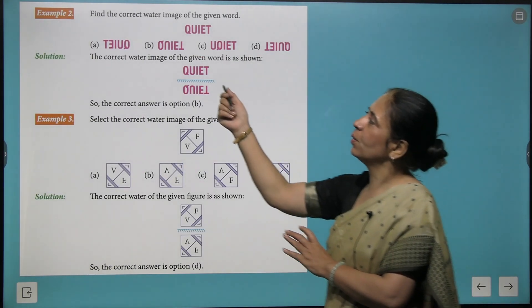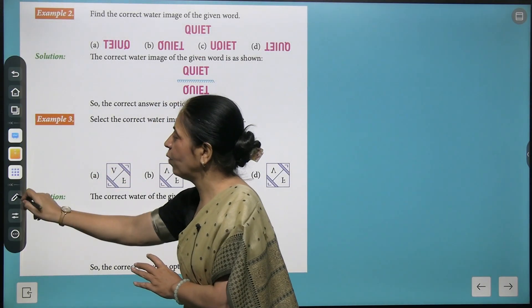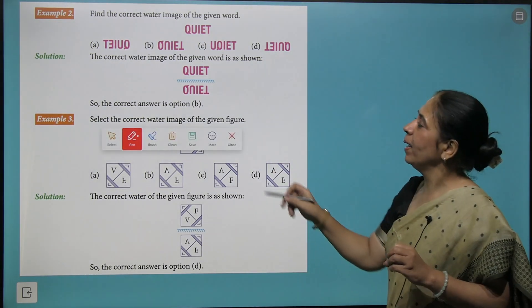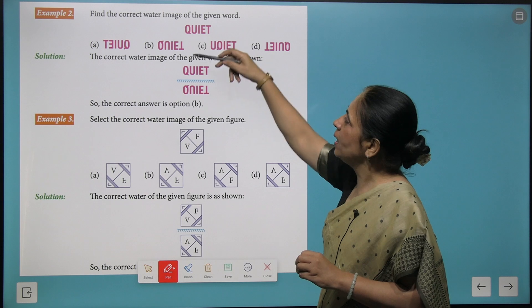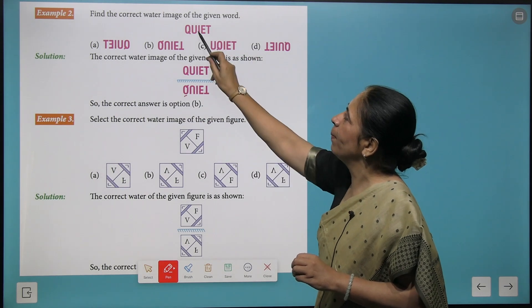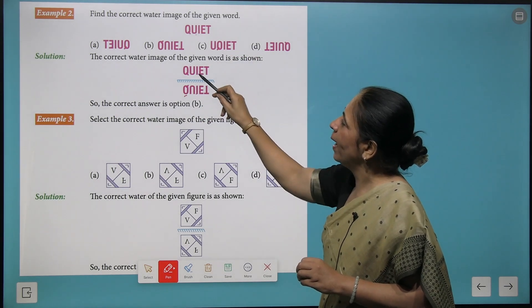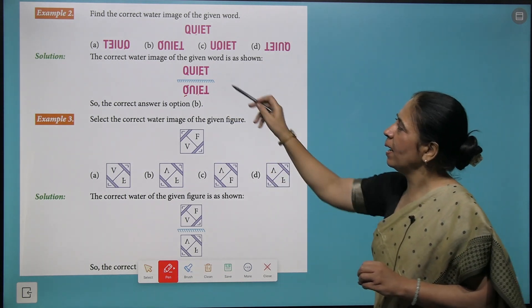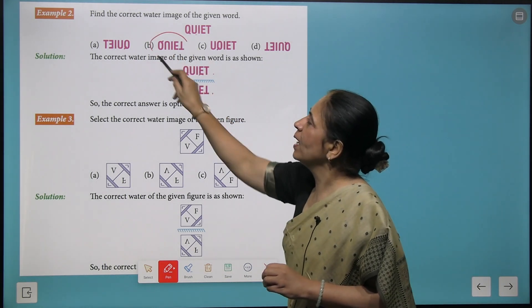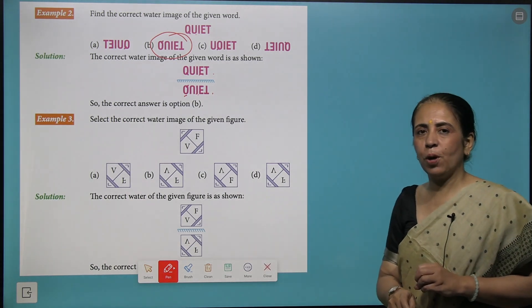Now we have another question where we have to find the water image of a word quiet. So this is Q upside and you see the lower side of the Q will come like this. U will come like this. I will remain same. E will also remain same. And here comes T. So we say B is the right option.